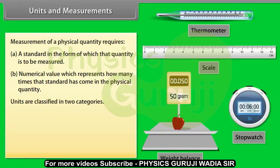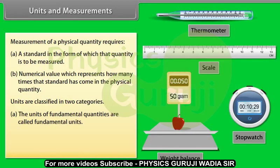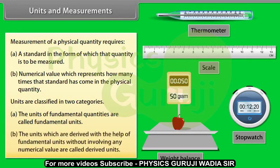Units are classified in two categories: fundamental units and derived units. The units of fundamental quantities are called fundamental units. The units which are derived with the help of fundamental units without involving any numerical value are called derived units.